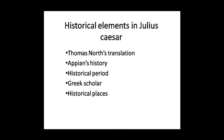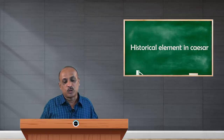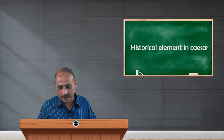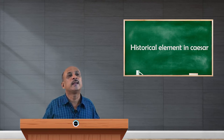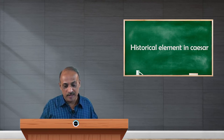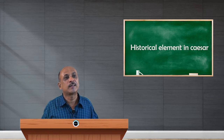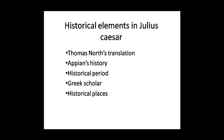Thomas North's translation of Plutarch's Lives is a major source for the play. Another source is Appian's history, which deals with the civil wars. The Civil Wars of 1578, or Appian's history, is another important account that Shakespeare uses here and there for his historical development of the situation.